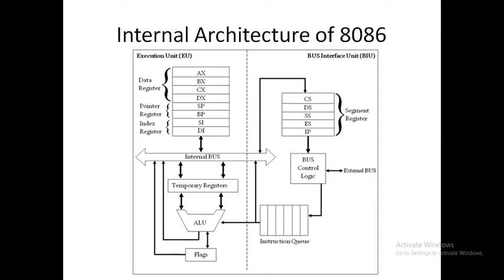8086 has two separate operating units that work independently. One is BIU, that is Bus Interface Unit, and another is Execution Unit, that is EU. The BIU is responsible for fetching the instruction from the memory or input-output device.